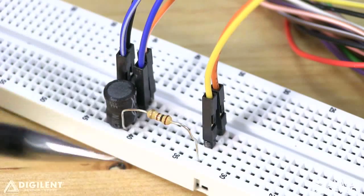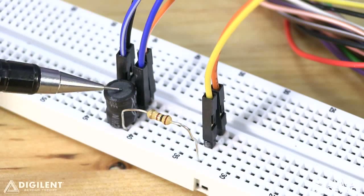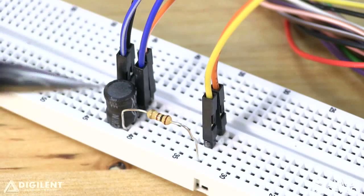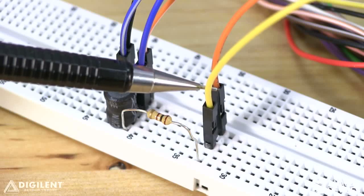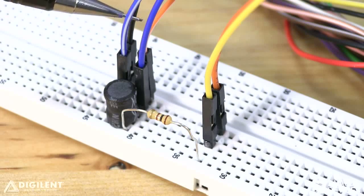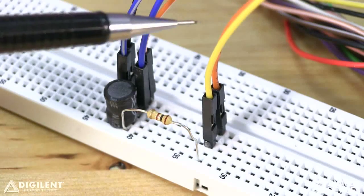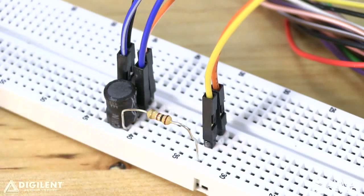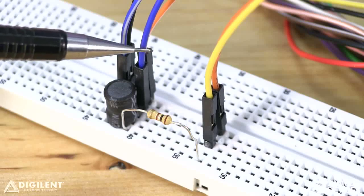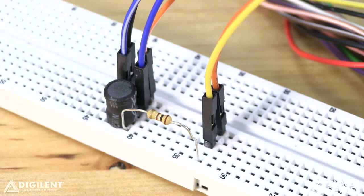Here's the circuit that we implemented. This is our 100 ohm resistor. This is our 1 millihenry inductor. We're applying voltage across the combination using channel 1 of our waveform generator, the yellow wire. Ground is at the other terminal of the inductor. We're using channel 1 of the oscilloscope, the two orange wires, to measure the voltage across the resistor, and channel 2 of the oscilloscope, the two blue wires, to measure the voltage across the inductor.